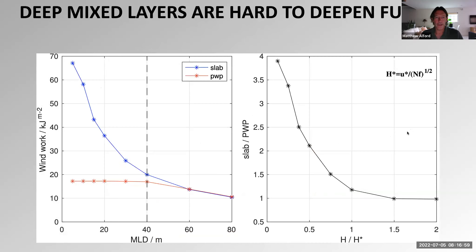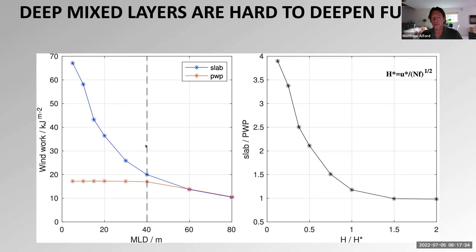We can quantify the dependence on mixed layer depth as a function of H-star, which scales as u-star over sqrt(NF). For very shallow mixed layers, you start to get very large estimates from the slab model. Once you're on the other side of the H-star line, the two models agree better. You can put that in terms of the ratio and it shows the expected effect. For shallow mixed layers, there's a smaller percentage of wind work going into inertial motions, and as the mixed layer gets deeper that fraction increases, which makes sense.